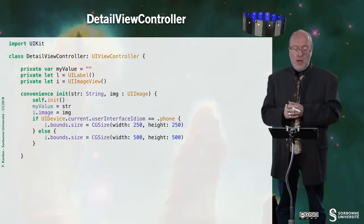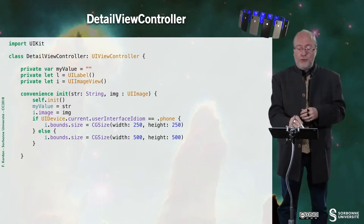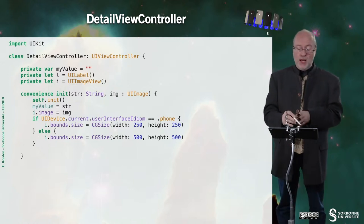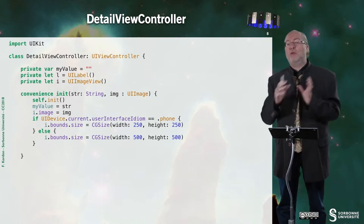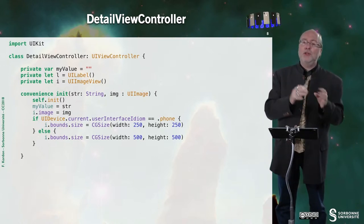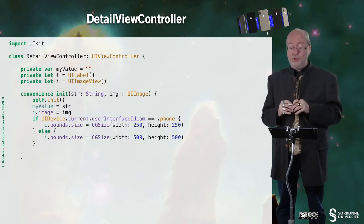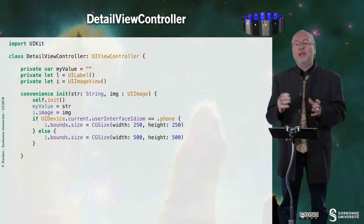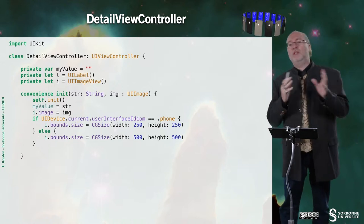Now there is a new class — the class in charge of describing the detail view controller: the view that is pushed when I press on a row in my UITableView. I have three variables. The first will store something that is passed when I do the init. I also pass an image because I will reproduce the logo shown in the row of the UITableView, and I enlarge this image differently according to whether it's a large device or a small device.